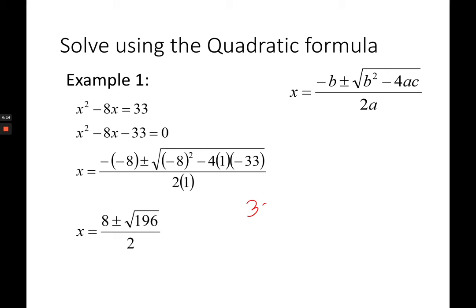Let me show the work. You have 12. 4 times 3 is 12, so it becomes 132. It becomes positive because of the double minus. And then negative 8 squared is actually positive 64. That becomes 196.